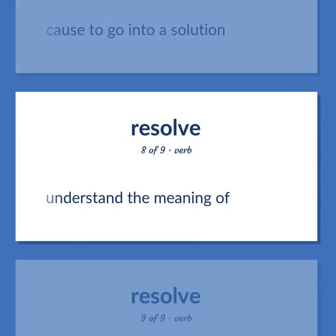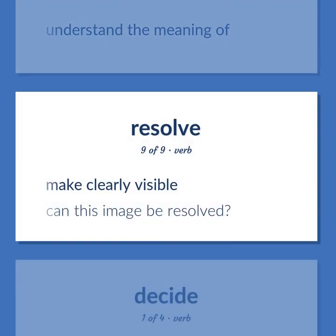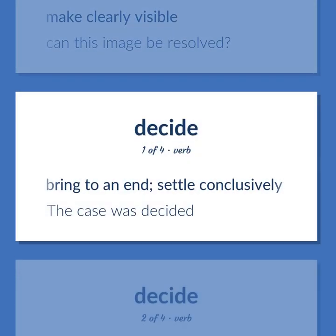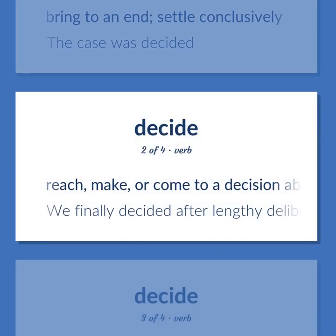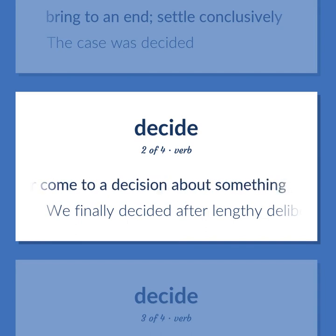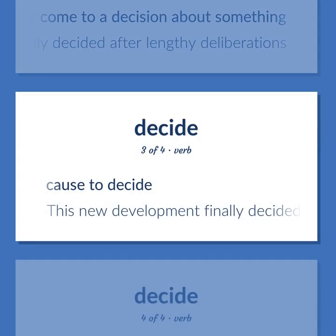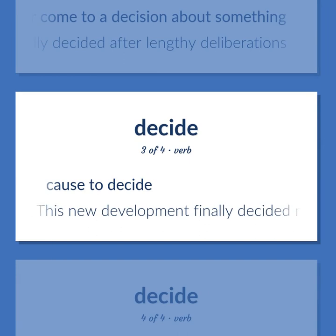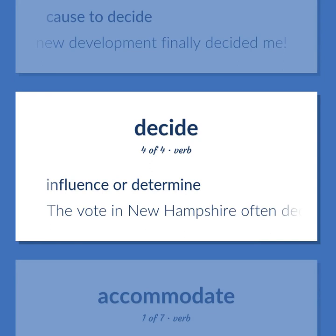Resolve also means: understand the meaning of; make clearly visible — can this image be resolved? Bring to an end, settle conclusively — the case was decided. Reach, make, or come to a decision about something — we finally decided after lengthy deliberations. Cause to decide — this new development finally decided me. Influence or determine — the vote in New Hampshire often decides the outcome of the presidential election.